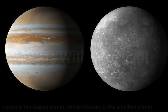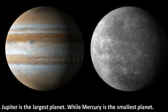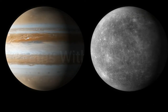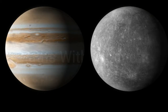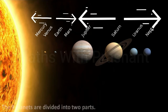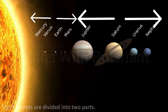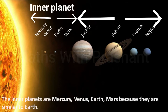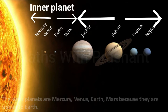Jupiter is the largest planet while Mercury is the smallest planet. The nine planets are divided into two parts. The inner planets are Mercury, Venus, Earth, and Mars, because they are similar to Earth.